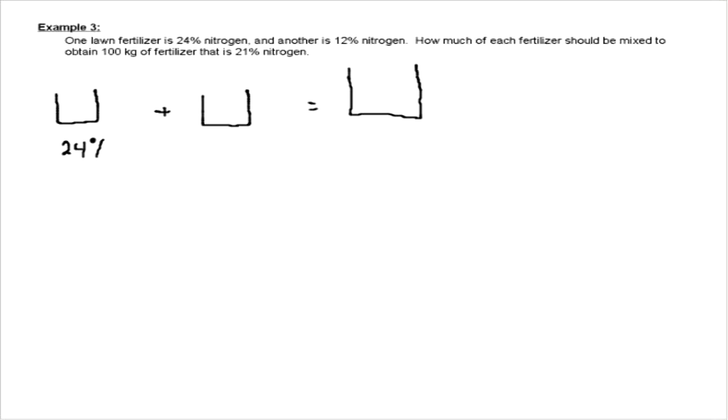The first one we're taking is at 24%, the second one is at 12%, and the total is going to be 21%. What else does the problem tell you? Well, we know that all of it combined is going to be 100 kgs.